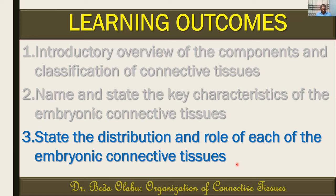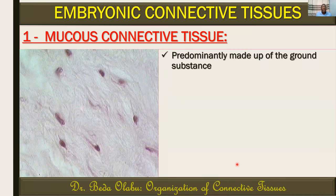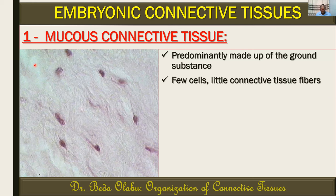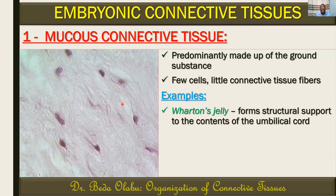Let's look at the distribution and role of each of the embryonic connective tissues. We can begin with the mucous connective tissues. A histological image illustrates how mucous connective tissue typically looks. We can see that the cells are very few, the material between the cells is quite a lot, and interrogation of that material reveals that it is predominantly ground substance with less fiber.